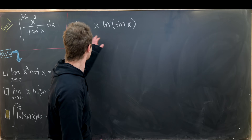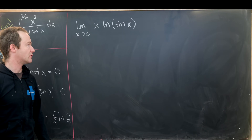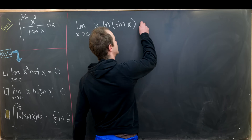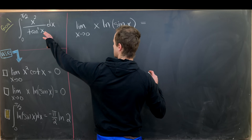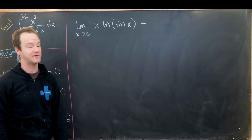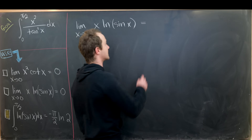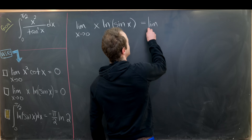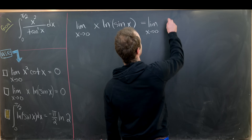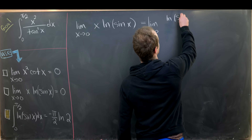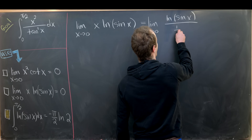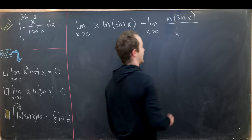We're looking at the limit as x→0 of x·ln(sin x). Since we're doing a complicated integral, L'Hôpital's rule is fair use here. I'll rewrite this as ln(sin x) over 1/x.